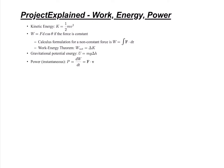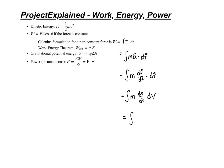If we rewrite work in terms of the integral of ma dot dr, we can rewrite it as m(dv/dt) into dr. So dv dot dr will be a scalar — the vectors become scalars — and we can rewrite it as m(dr/dt)dv. dr/dt is none other than speed, so that's mv dv, which gives us one half mv squared.